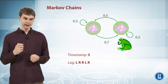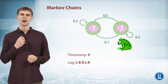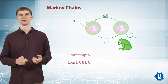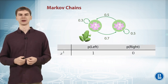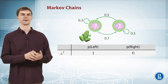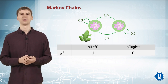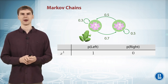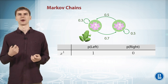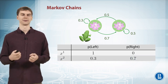We can ask ourselves: where will the frog be after 10 time steps? Let's say we started at time step 1 and the frog was on the left — so with probability 1 it was on the left and with probability 0 it was on the right. What is the probability that it will be on the left or right at time step 2? Well, it's 0.3 and 0.7.